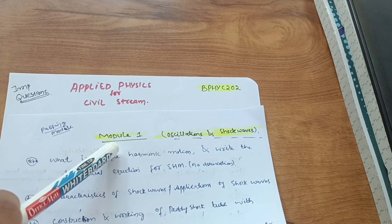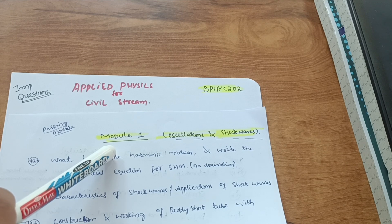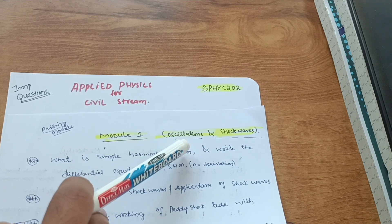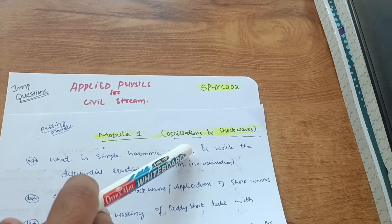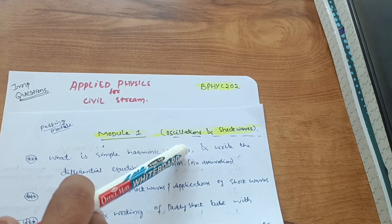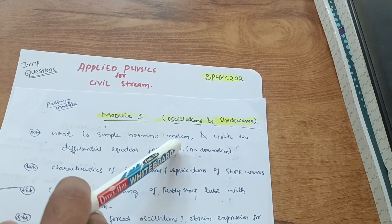Let me tell you some passing modules in this particular subject. First module is considered a passing module. It is very simple and its numericals are simpler ones. This is oscillations and shock waves. You may already come across these concepts in 12th class itself or PU second.